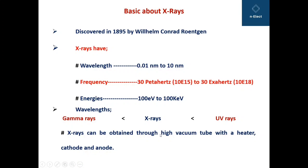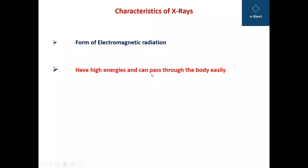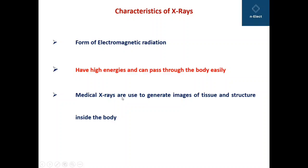X-rays can be obtained through high vacuum tube with a heater, cathode and anode. Characteristics of X-rays: X-rays are a form of electromagnetic radiation with high energies and can pass through the body easily. Medical X-rays are used to generate images of tissue and structures inside the body.